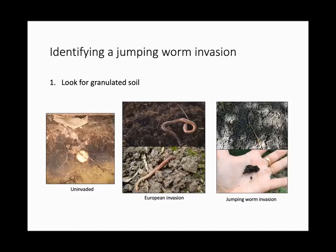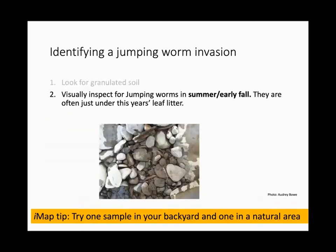To identify jumping worms, look at the soil itself — that can give you a lot of information even without seeing the worms. On the far left you see a thick organic horizon in an uninvaded forest; in the middle, a mixed organic horizon from European invasion; and on the right, that distinctive coffee ground, gravelly texture that jumping worms create. If you see that texture, it's a very good sign that you've got them.